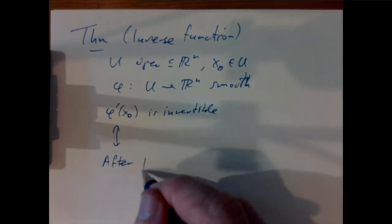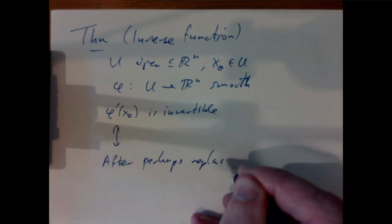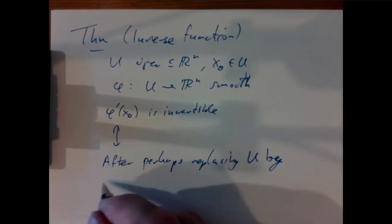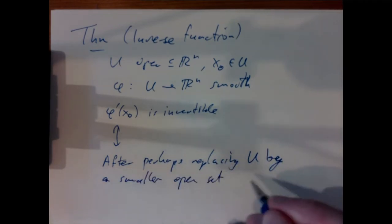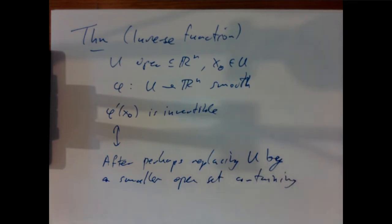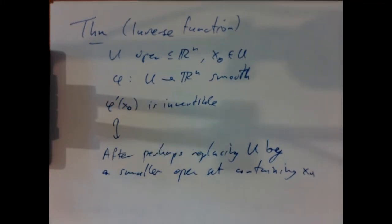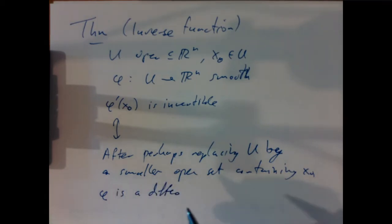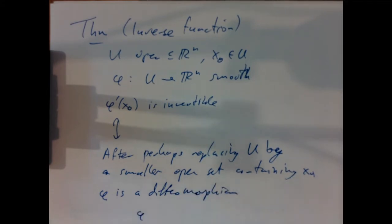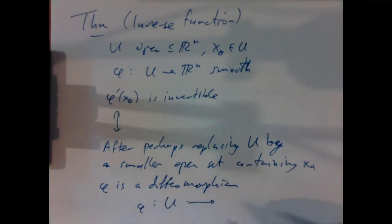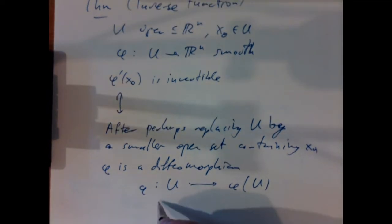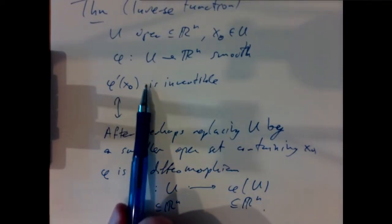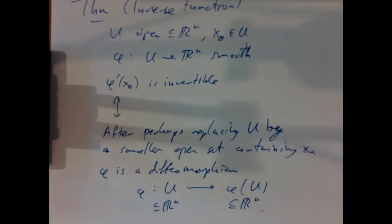More precisely: after perhaps replacing U by a smaller open set containing x₀, φ is a diffeomorphism from U to φ(U), both open in Rⁿ. So we can tell if a nonlinear map is invertible by checking the invertibility of its linear approximation — if that works, then at least locally the map is invertible.